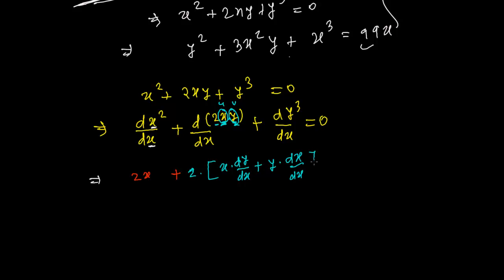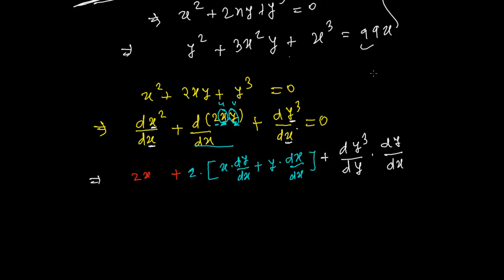Completing the product rule for 2xy gives us 2 times [x·(dy/dx) + y·1]. Now for the last term, y³: notice that y is not the same as x — y is itself a separate function. So we cannot directly apply the power rule as if the base were x.